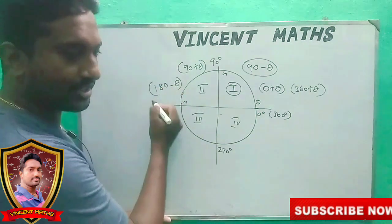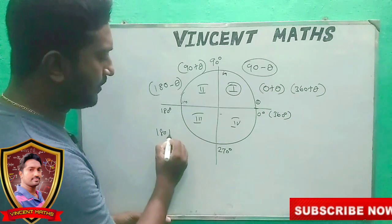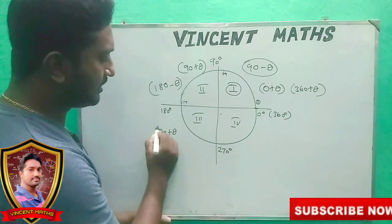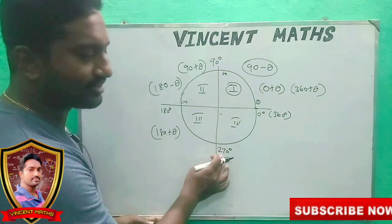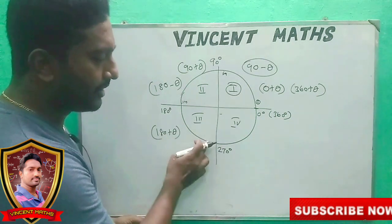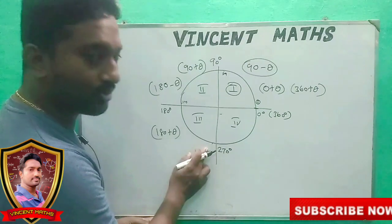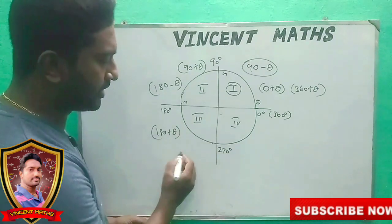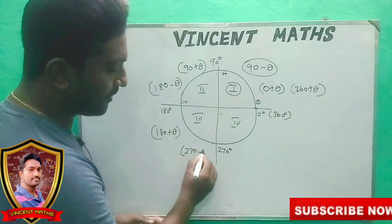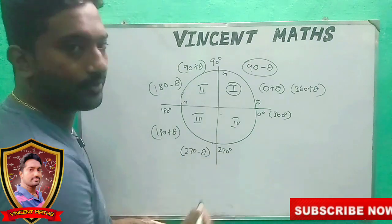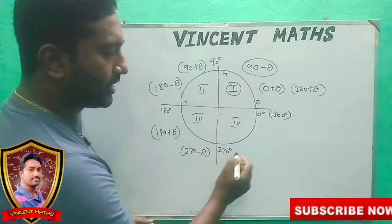If you look at the third quadrant, it is 180 plus theta. If you look at the fourth quadrant, when it is 269 then it is 270 minus theta.